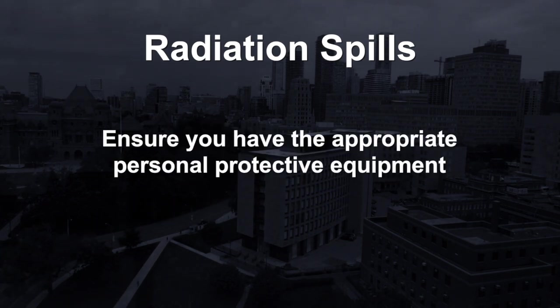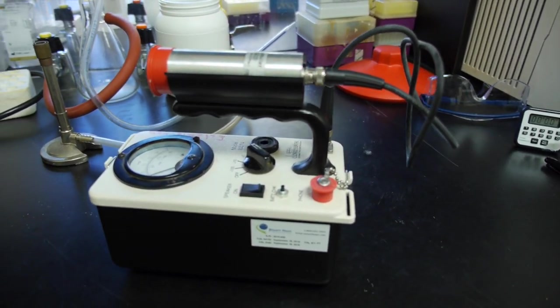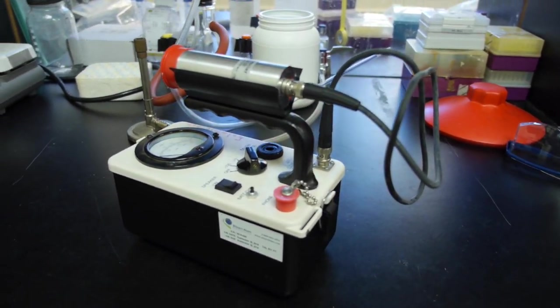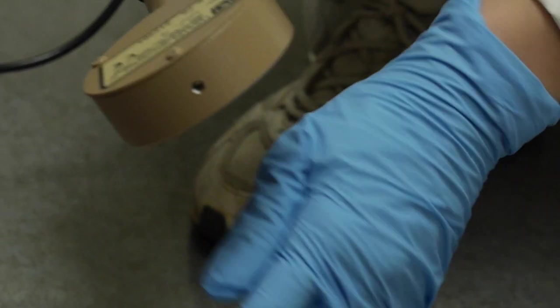Start by ensuring you have the appropriate personal protective equipment, as well as a portable detector that will detect the type of source you have spilt. After each step of the cleanup, ensure you monitor the area as well as your gloves with the detector.